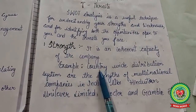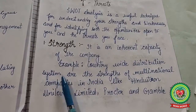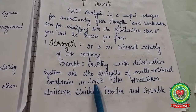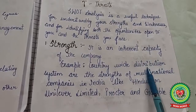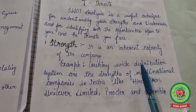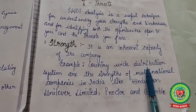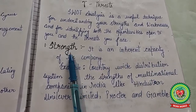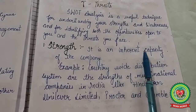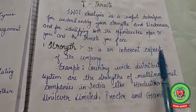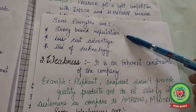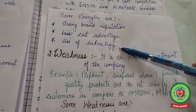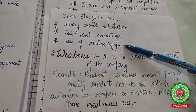Regarding strength in detail: a countrywide distribution network system is a strength of multinational companies in India like Hindustan Unilever Limited and Procter & Gamble — they provide goods and services according to customer needs and preferences. Strength is an inherent capacity of the company which it uses to gain strategic advantage over its competitors. Other strengths include strong brand reputation, low cost advantage, and use of modern technology.